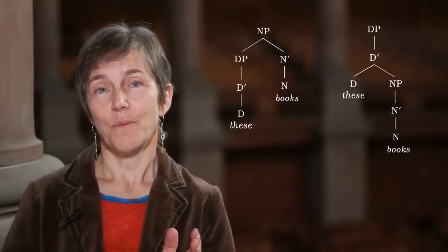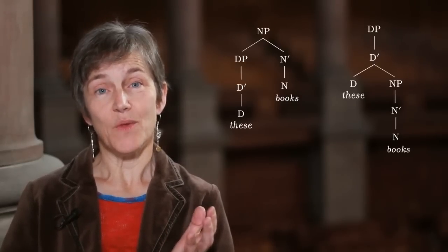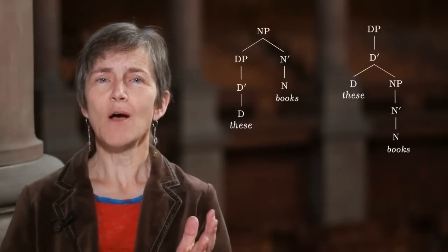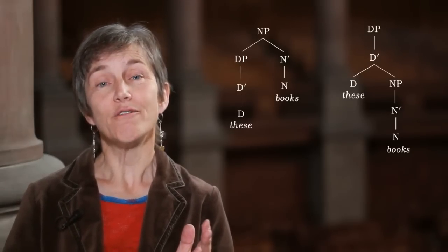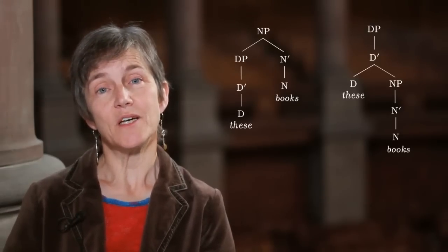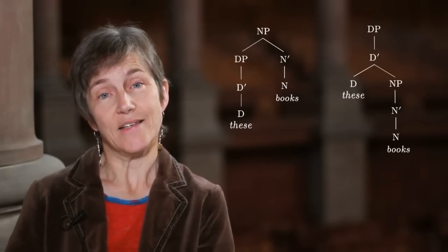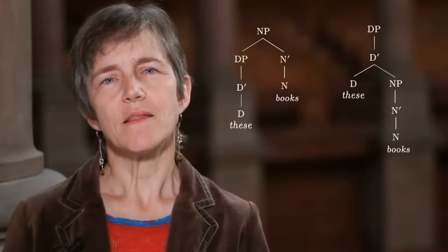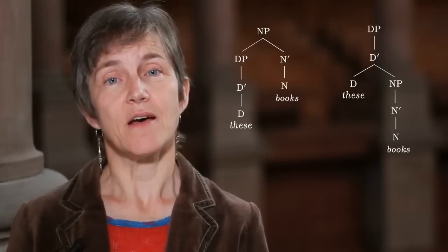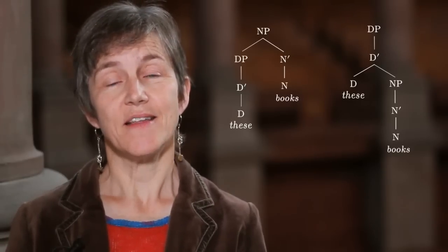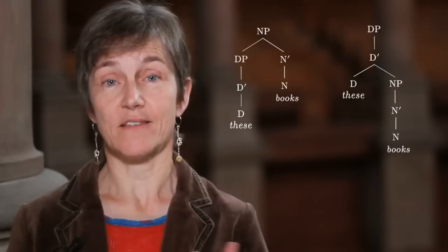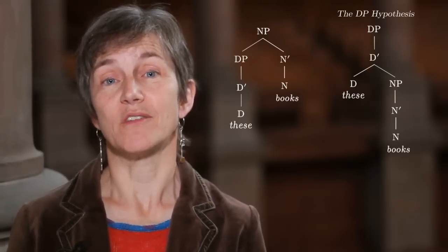The effect of that, if we're sticking with x-bar theory, would be to say that the structures we've been calling noun phrases are in fact determiner phrases — projections of the determiner. That determiner takes the noun phrase as its complement. The idea that what we've been calling noun phrases are really determiner phrases — where the determiner takes a noun phrase as its complement and projects a determiner phrase — has been called the DP hypothesis.